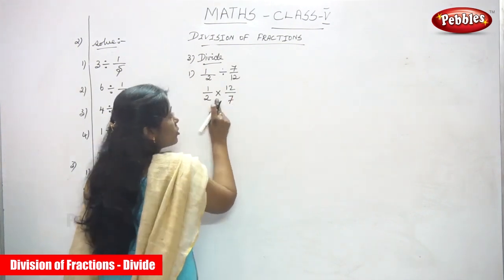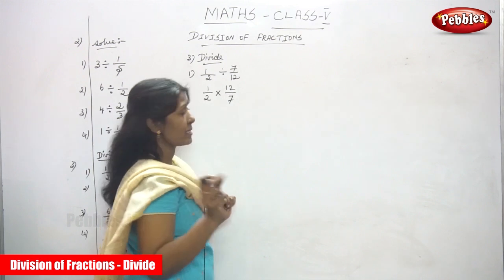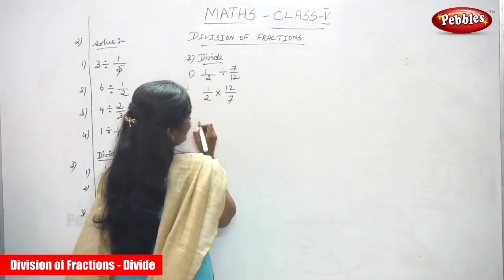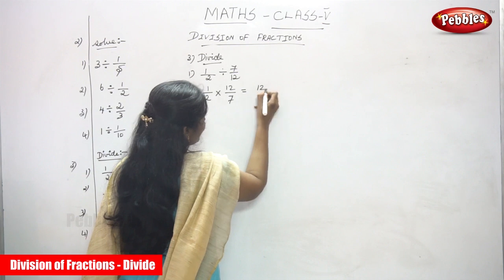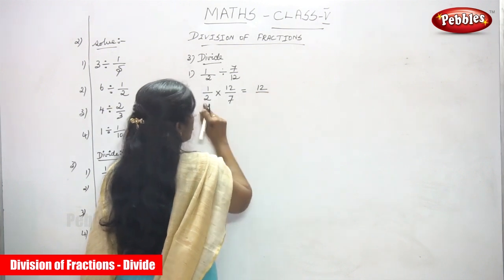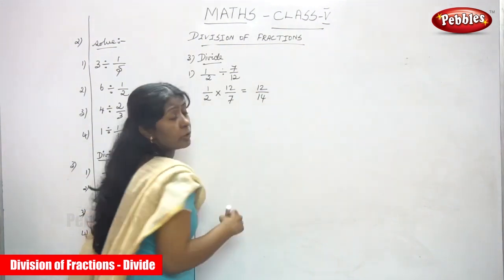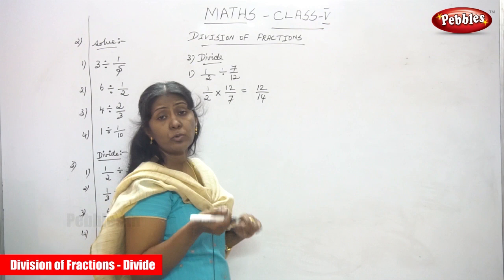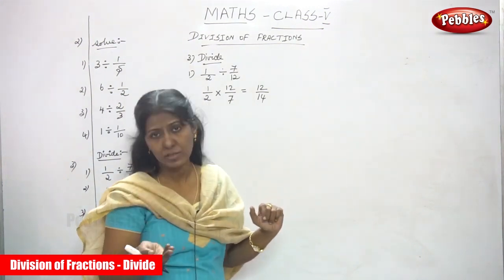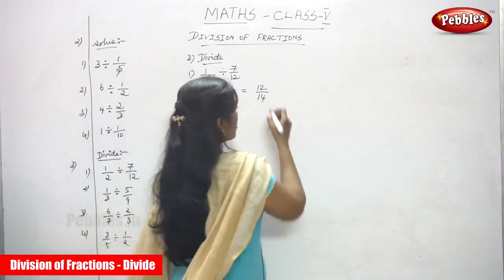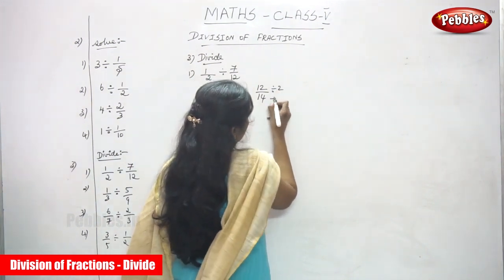Don't forget to change the division sign to multiplication. So now you have 1/2 into 12/7. Multiply: 1 × 12 = 12 and 2 × 7 = 14, giving 12/14. After that, you need to reduce this to the lowest term.